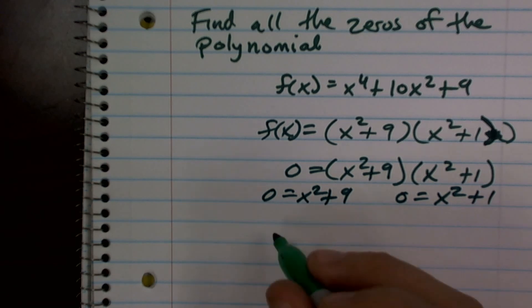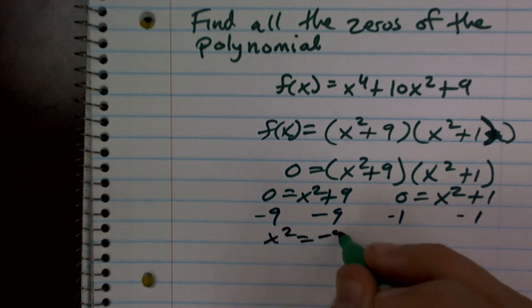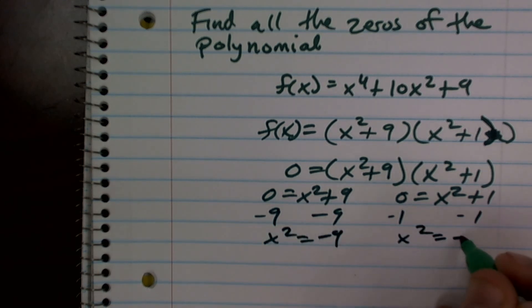Now what I'll do is I'll solve for x squared, and what I get when I subtract nine on both sides, subtract one on both sides, I get x squared equals negative nine, and x squared equals negative one.